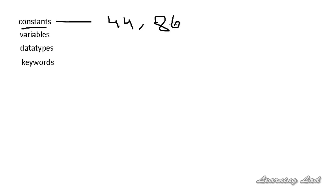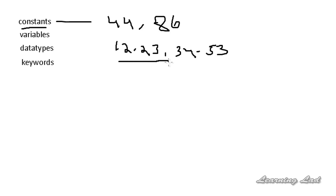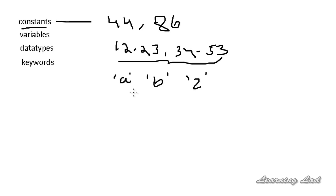Then we have floating point constants. For example, 12.23 — a number with decimal values — 34.53, etc. So all these are floating point constants. Then we have character constants, for example a letter A, or a letter B, or a letter Z — character constants.